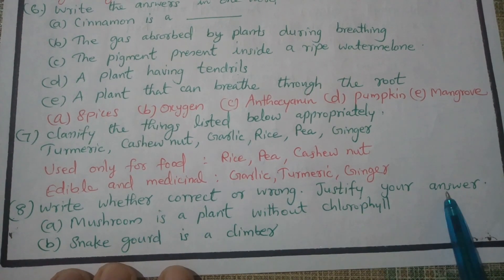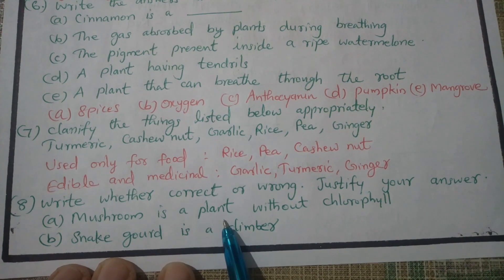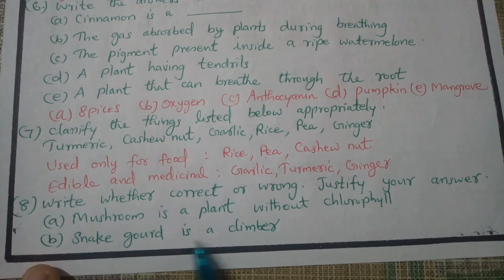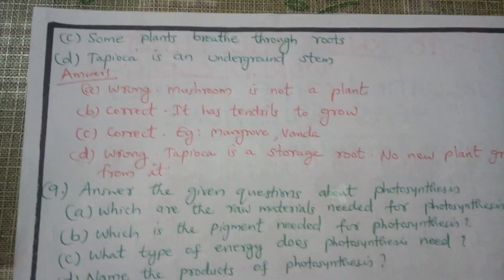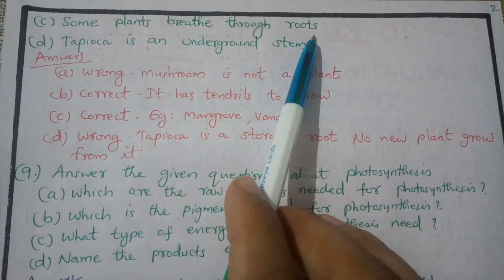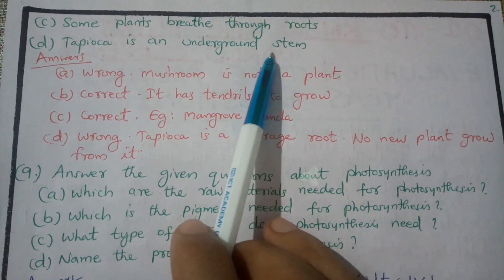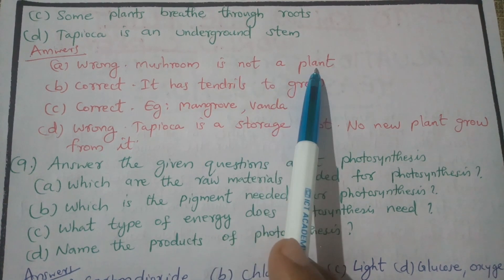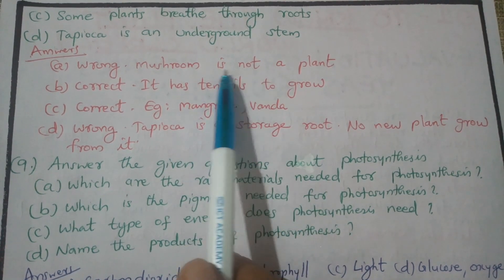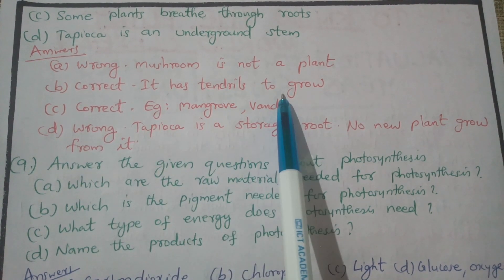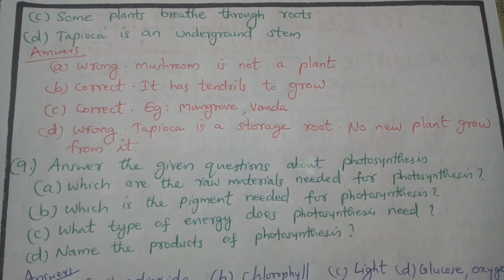Correct or wrong — justify your answer. Statement 1: Mushroom is a plant without chlorophyll. Statement 2: Snake guard is a climber. Statement 3: Some plants breathe through roots. Statement 4: Tapioca is an underground stem. Statement 1 is wrong because mushroom is not a plant. Statement 2 is correct because it has tendrils to grow.